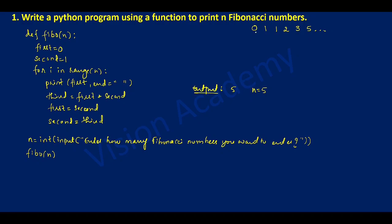For the first time, i value is zero, which is less than four, so the four statements execute. It prints first — for the first time first is zero, so it prints zero. Then third equals first plus second: adding zero plus one gives one, so one is third. Now first is set equal to second, so second's value becomes first, and third becomes second.